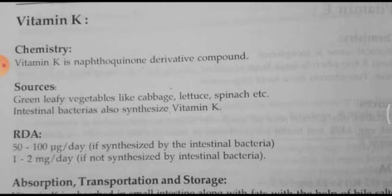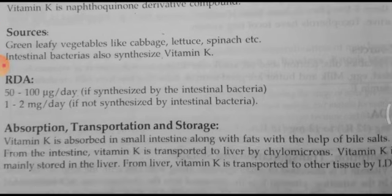The sources of Vitamin K are green leafy vegetables like cabbage, lettuce, and spinach. Intestinal bacteria also synthesize Vitamin K. The RDA is 50 to 100 micrograms per day if synthesized by intestinal bacteria, and it may increase up to 1 to 2 mg if not synthesized by intestinal bacteria. Absorption of Vitamin K takes place from the small intestine along with fats and bile salts. From the intestine, Vitamin K is transported to the liver by chylomicrons, and Vitamin K is mainly stored in the liver. From the liver, Vitamin K is transported to other tissues by LDL.